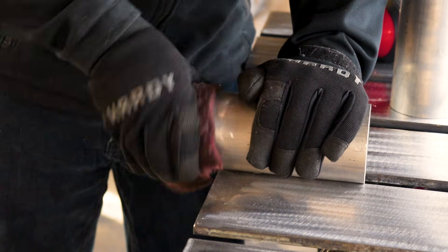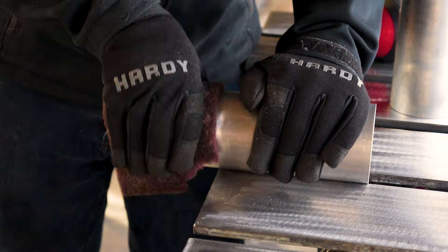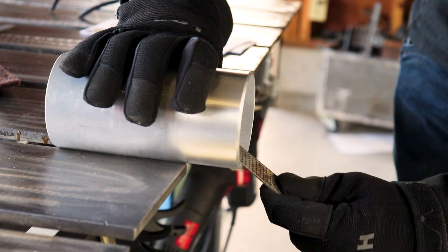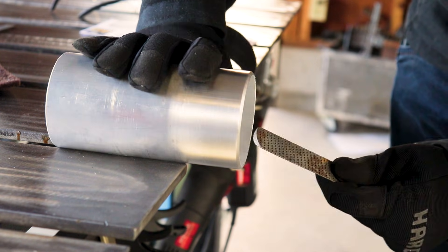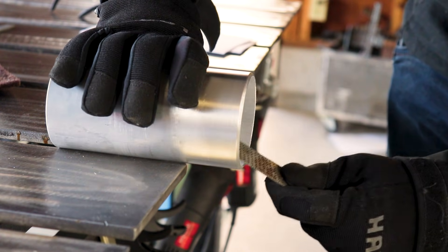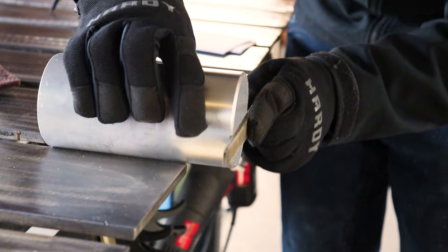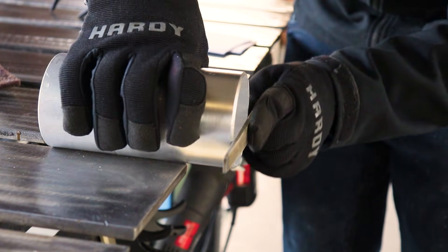Right here I'm just scotch briting it so it'll look nice after it's welded. Then I go around and get all the burrs out because with aluminum it just pushes those oxides to the surface, so you'll still have a real rough surface if you don't do that.